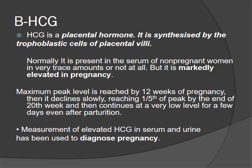Beta-HCG: HCG is a placental hormone synthesized by the trophoblastic cells of placental villi. Normally it is present in very small amounts or not at all in the serum of non-pregnant women. It is markedly elevated in pregnancy, with maximum peak level reached by 12 weeks. It then declines slowly, reaching one-fifth of the peak by the 20th week, continuing at a low level for a few days after parturition. Measurement of elevated HCG in serum and urine has been used to diagnose pregnancy.